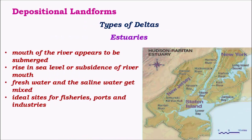Estuaries are found where the mouth of the river is submerged in the sea. This submergence happens mainly due to subsidence of the river base, giving rise to an estuary. Here fresh water and salt water get mixed, making them an ideal site for fisheries. Both fresh water and salt water marine animals are found in this region, and due to this diverse animal life these regions are biodiversity-rich, with various kinds of birds including migratory birds visiting during various seasons.